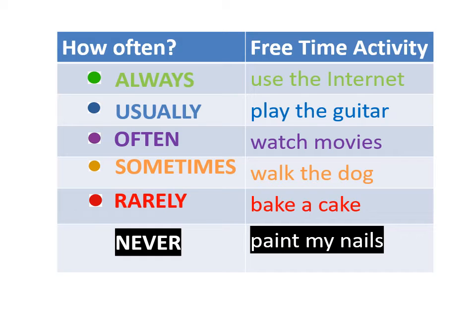Đây là bảng về những hoạt động lúc rảnh rỗi của thầy Jeremy và tần suất làm những hoạt động đó: use the internet — always; play the guitar — usually; watch movies — often; walk the dog — sometimes; bake a cake — rarely; and never paint my nails.